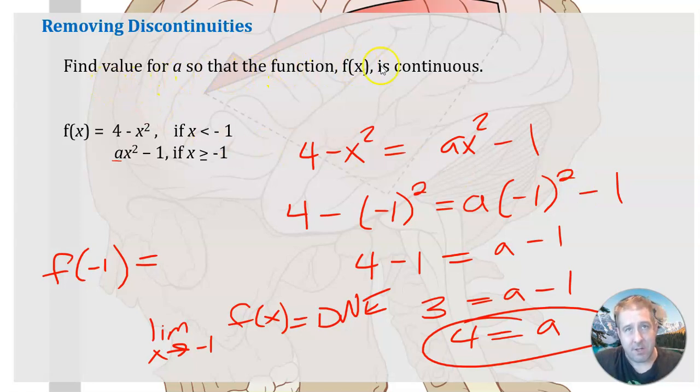Finding the value of A so that the function f of x is continuous. So we're making this continuous. That means we're removing that discontinuity. We're taking this function and we're going to make sure, since we don't know what A is, what would A have to be in order to make this piece and this piece meet at the same point? Basically, it means it has to have a limit at that point. It has to be the left and the right-hand sides meeting at the same point as what x equals negative 1 is.